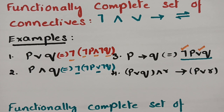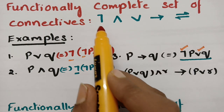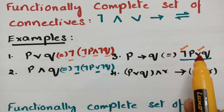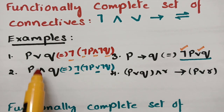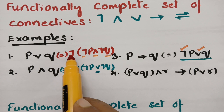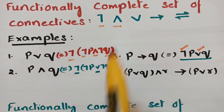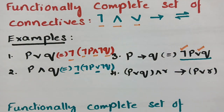Even though we have implication in the original statement, it is replaced by negation and disjunction in the equivalent form. So the connectives — implication and disjunction and conjunction — are all replaced. Only the two sets, negation∧conjunction or negation∨disjunction, are the functionally complete sets of connectives.